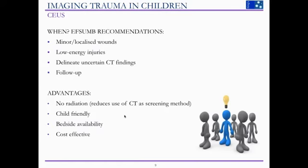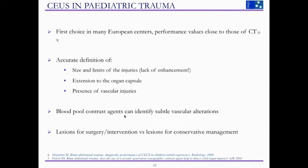The advantages of CEUS are that it comes without radiation, it's very child-friendly, it can be done at the bedside, and it's very cost-effective. In the context of pediatric trauma, CEUS is the first choice in many European centers. When you look at the performance values, they're very close to those of CT, giving a very accurate definition of the injury, whether there is extension to the capsule or presence of vascular injuries. Being a purely intravascular contrast agent, you can identify very subtle vascular alterations and active bleeding, and it can ultimately guide management towards either surgery or conservative management.